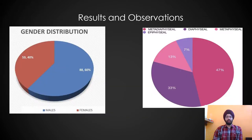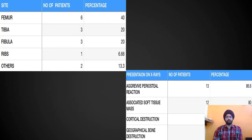In the results and observations of this study, most of the cases were found to be present in males. Most cases occurred in the metaphysis, followed by the diaphysis. The most common sites were the femur and tibia, followed by the fibula and ribs.